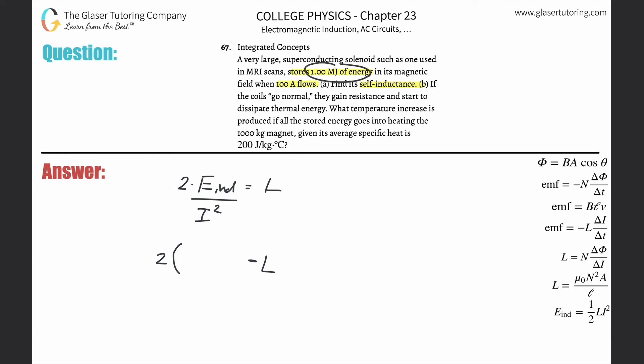So now here it is. Self-inductance will be equal to two multiplied by the energy that's stored, and it says it's one megajoule but we need that in joules, so take one and multiply it by 10 to the sixth. The current is in the bottom, they gave it to us in amps so that's fine, but you've got to square it.